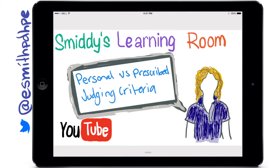Welcome back to Smitty's Learning Room. Today we continue with Core 2 and we're going to focus on personal versus prescribed judging criteria. Before you watch this video you might like to watch the video on objective and subjective measurements and validity and reliability of tests.